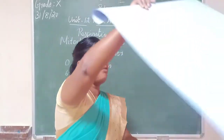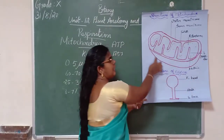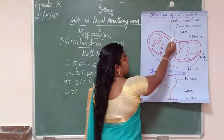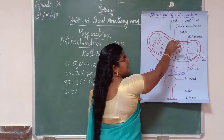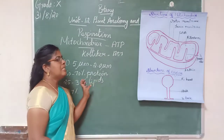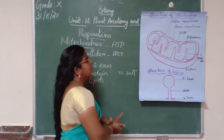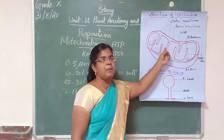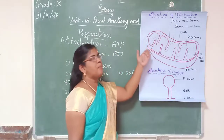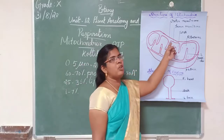Now we are going to learn the structure of mitochondria. Mitochondria is surrounded by a double membrane — an outer membrane and an inner membrane. Each membrane is about 70 to 80 Å in thickness. The outer membrane is freely permeable and will allow all small molecules to get inside the cell. But the inner membrane is selectively or semi-permeable — it allows only certain selected molecules to pass through.